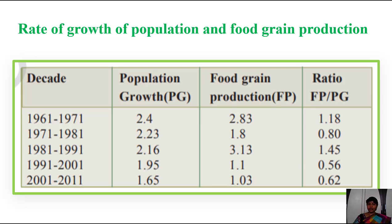In 1981 to 1991, population growth was 2.16 and food grain production was 3.13 — ratio 1.20, showing some improvement. In 1991 to 2001, population growth was 1.95 and food grain production was 1.1 — a very low ratio. In 2001 to 2011, population growth was 1.65 and food grain production was 1.03, with a ratio of 0.2 — also less.